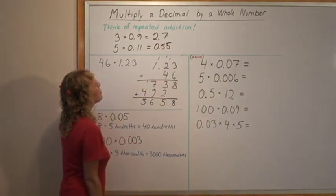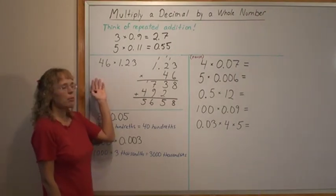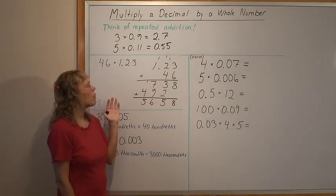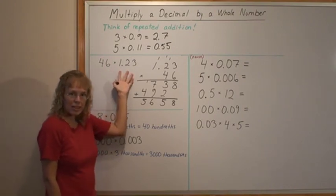So that's pretty easy and this same principle will work in column multiplication too. Here you have 46 copies of 1.23.